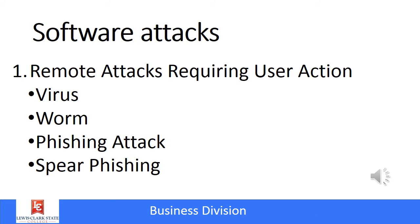One of the types of threats discussed earlier was a software attack. A software attack is typically a remote attack, but it requires that the user actually do something to install it on the computer. A virus is computer code that performs malicious actions by attaching itself to another computer program. A worm is additional computer code that performs malicious actions and will replicate or spread itself, trying to infect other computers on the network. Phishing is when an individual uses deception to acquire sensitive information — such as your password — by masquerading as an official-looking email, perhaps from the IRS or a bank. Spear phishing is a targeted attack where perpetrators find out as much personal information as they can and include it in the phishing email to make it appear to be a legitimate request.